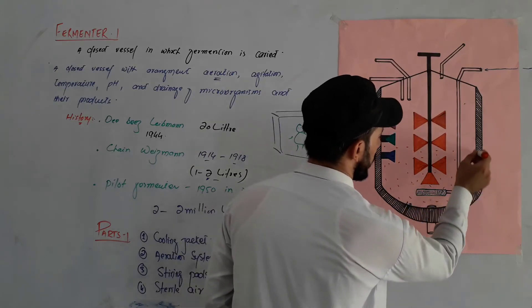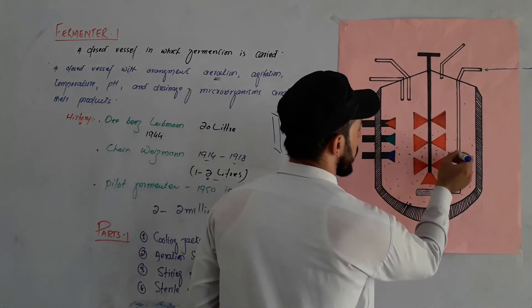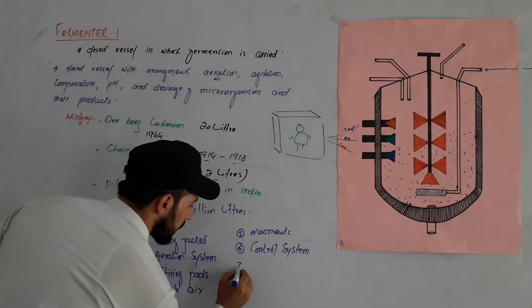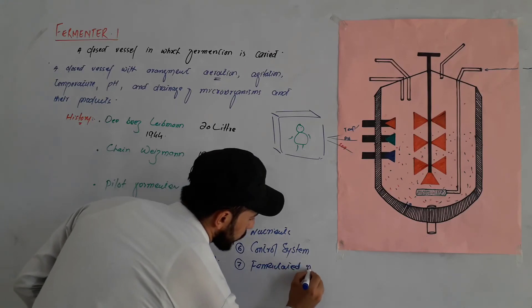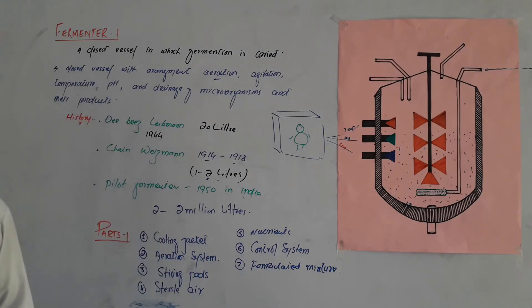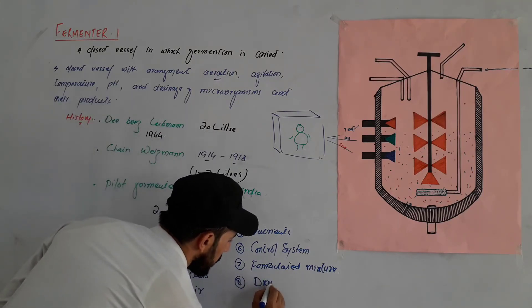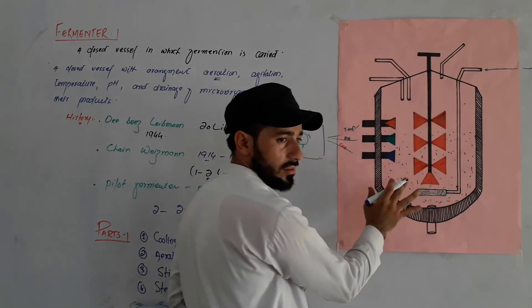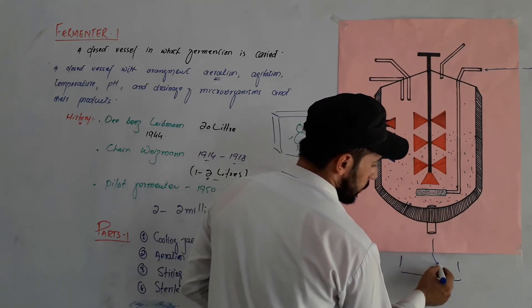The fermented mixture is removed from the fermenter at the end. For example, bacteria or microorganisms produce proteins and other products. The fermented mixture containing these products is drained out through the drainage system once fermentation is complete.